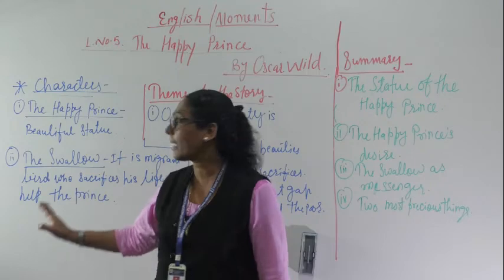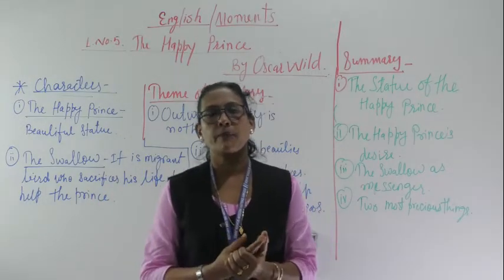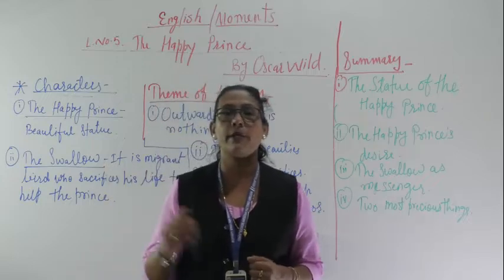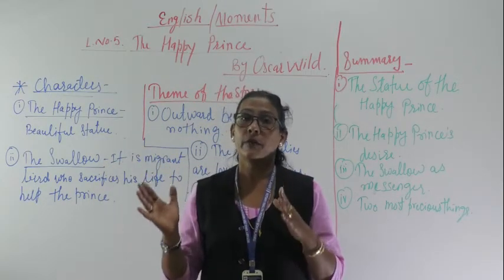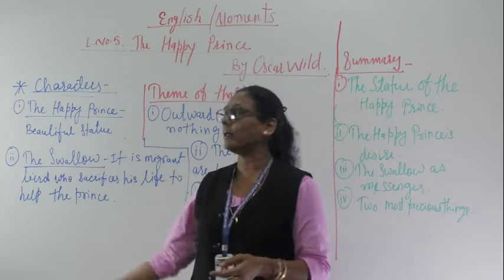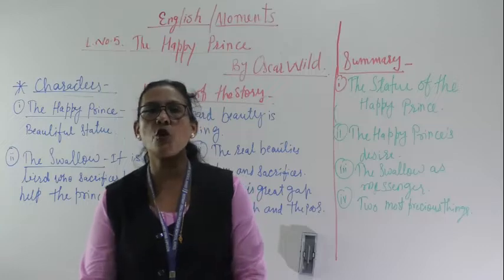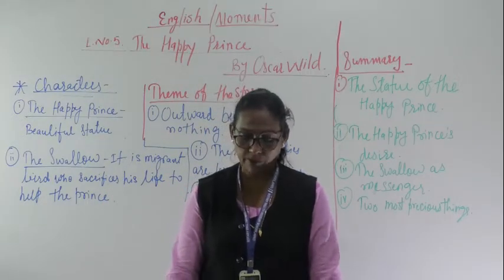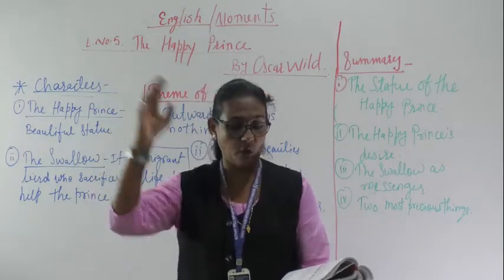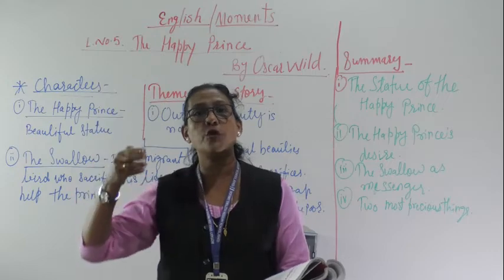The two main characters are the Happy Prince and the Swallow, a migrant bird. In certain seasons, birds migrate thousands and thousands of kilometers from one place to another because of the cold climate. The statue of the Happy Prince is installed at the top of a very tall column.